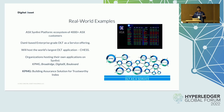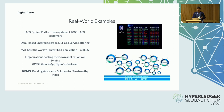Other solutions being built on Symphony include an application that automates off-market transfers in the equities market by Broadridge, an ownership register for private companies by Boulevard, and Drawbridge — a RegTech application that helps companies reduce employee and director securities trading risks by automating the approval process, developed by DigitalX.